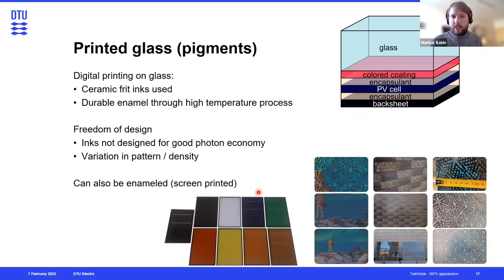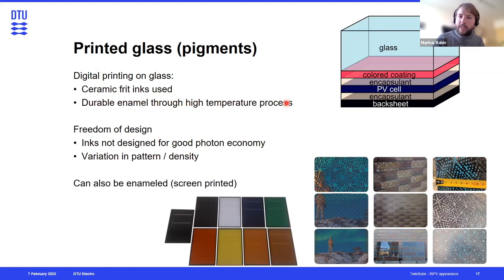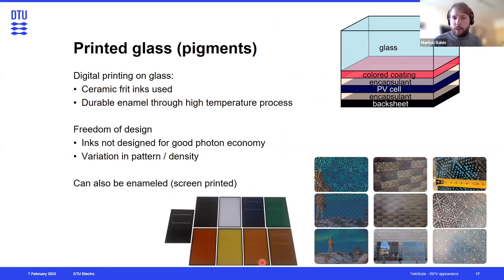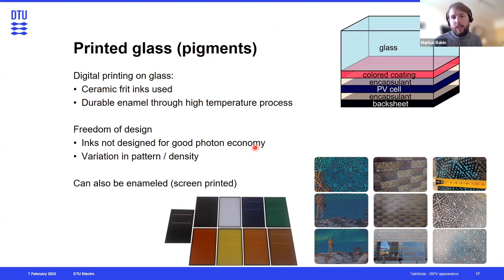Back to the coloring technologies. Pigments are usually applied to the inside of glass via digital printing — using ceramic inks that are fritted or baked in a high-temperature process on the glass surface, creating a very strong and durable enamel. You have quite a lot of freedom of choice: different colors or different patterns. However, there are not really that many inks on the market optimized for PV applications, which means these pigments absorb a lot of sunlight — so you lose transmission and therefore also lose efficiency in your PV module.